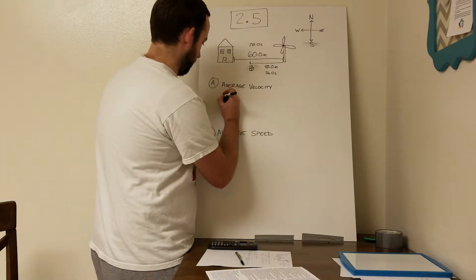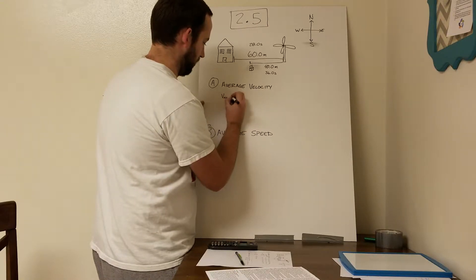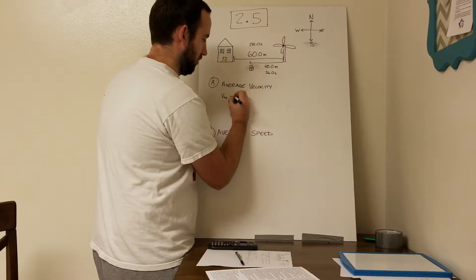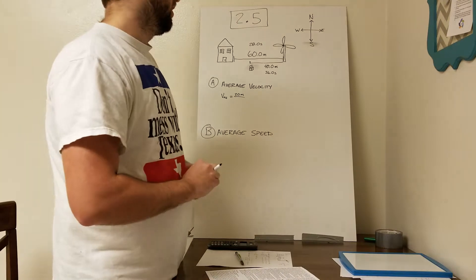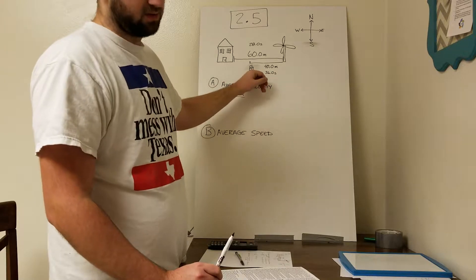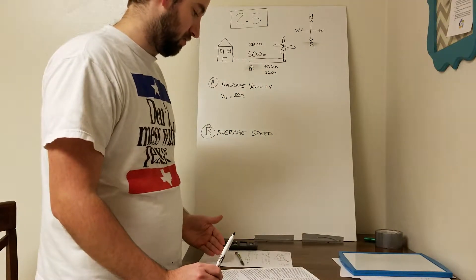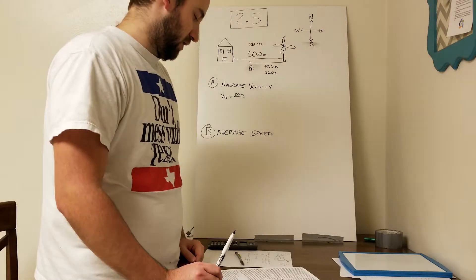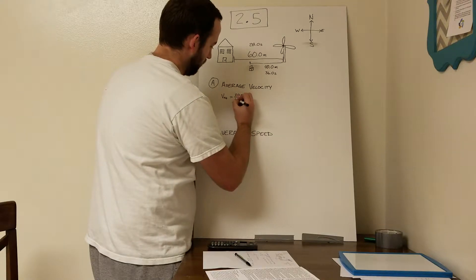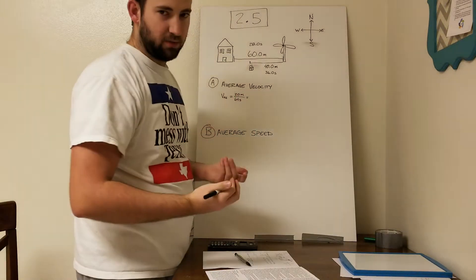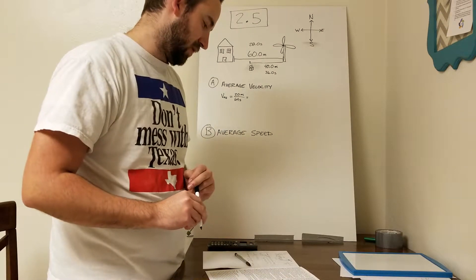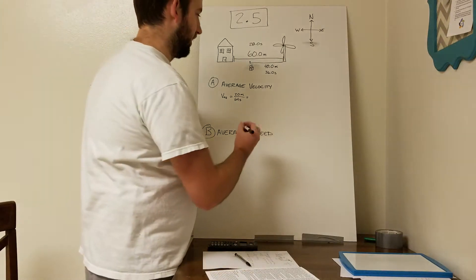I'll just write this up here: the average velocity equals 20 meters over the change in time. We know that took 28 seconds plus 36 seconds, so the total amount of time, the change in time, was 64 seconds. We'll put that in the denominator. When we simplify that fraction, we end up with 0.313 meters per second for the average velocity.